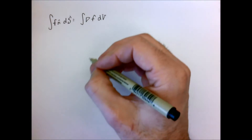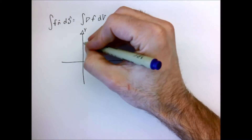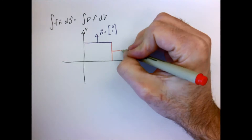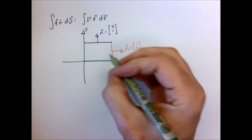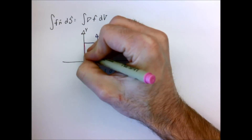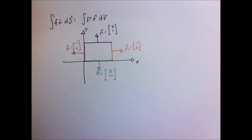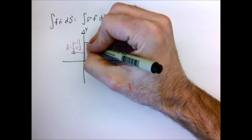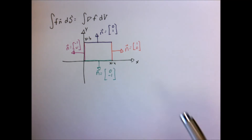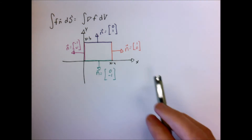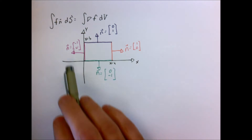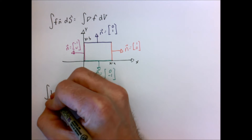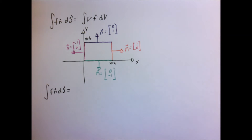Let's start with the first theorem and do a two-dimensional proof. I'll consider a rectangular region with four sides, going from x equals 0 to a, and y equals 0 to b, with sides aligned with the coordinate system. So all my normal vectors will simply be (1,0), (0,1), (-1,0), and (0,-1).